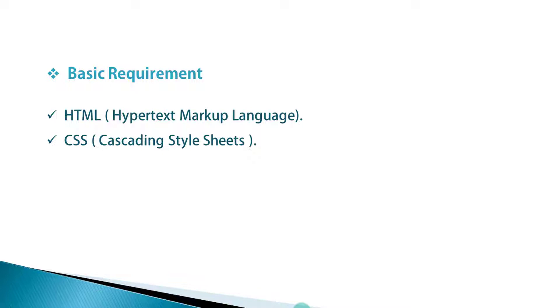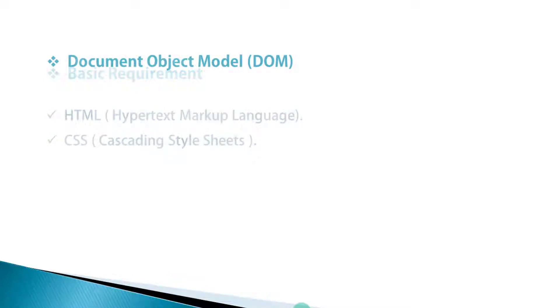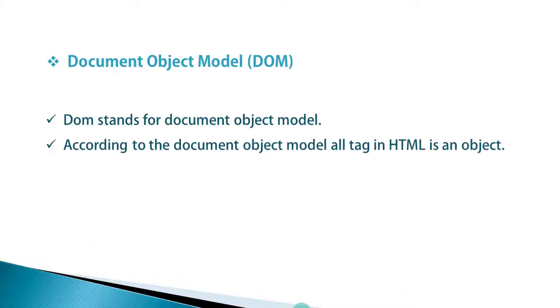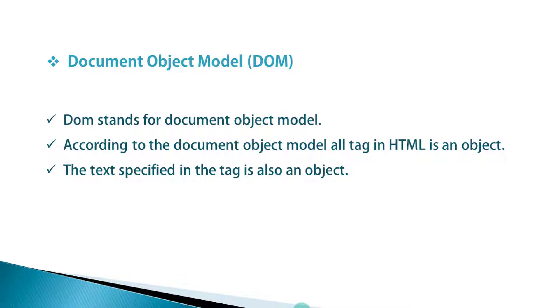Using JavaScript, you can fairly make these pages dynamic. Using the web browser, rather than working on the text, you can use a graphical interface. These pages might dynamically load information as needed. So we will first understand what is DOM. DOM stands for Document Object Model. According to the Document Object Model, all tags in HTML are objects. The text specified in the tag is also an object, and all these objects are accessible using JavaScript.